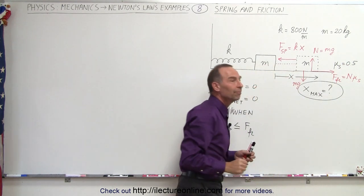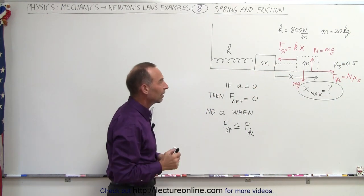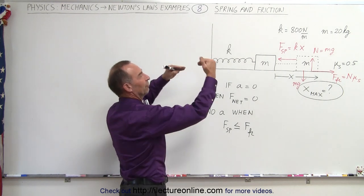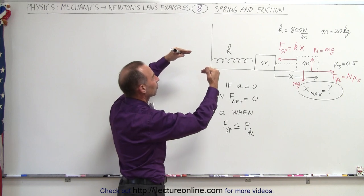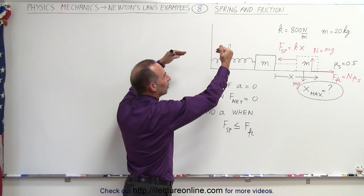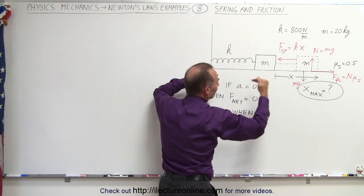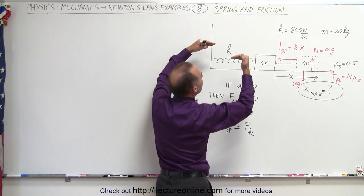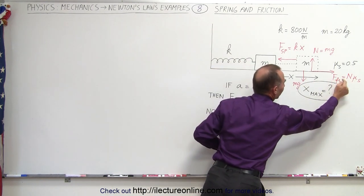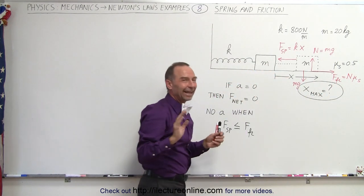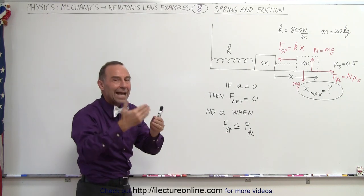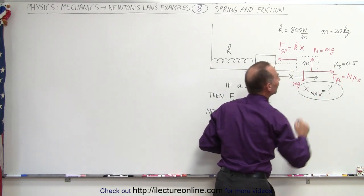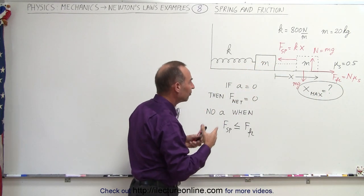The object will accelerate to the left once you pull it so far that the spring force becomes larger than the maximum the friction force can be. As you increase the spring force, the friction force increases to match it, but eventually the spring force becomes so high that the friction force cannot match it anymore. The maximum the friction force can be is N times mu sub s — the friction force can never exceed that value.